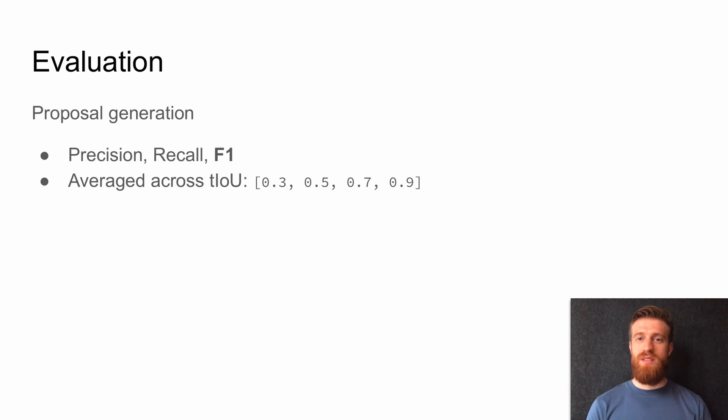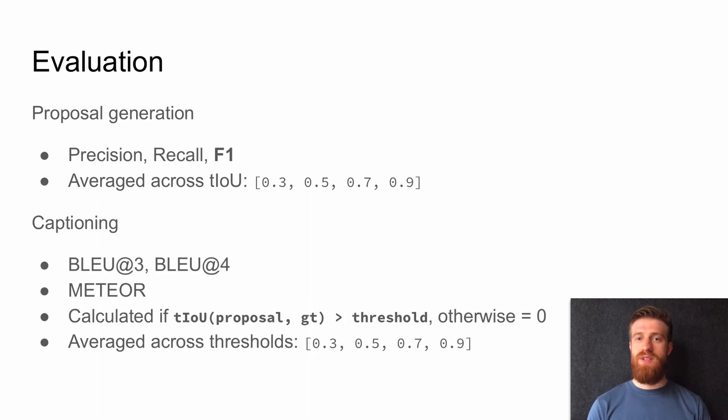We evaluate our model using the traditional set of metrics for dense video captioning tasks. For proposal generation, we track precision and recall, but mostly rely on F1 measure. While for captioning, we use BLEU 3 and 4 as well as METEOR. We average metrics for a list of thresholds.